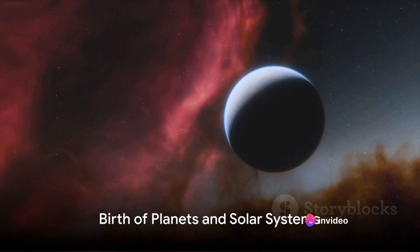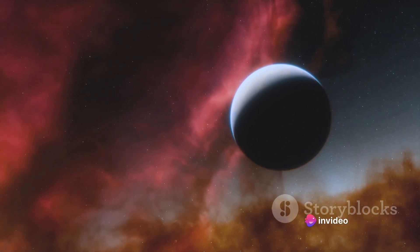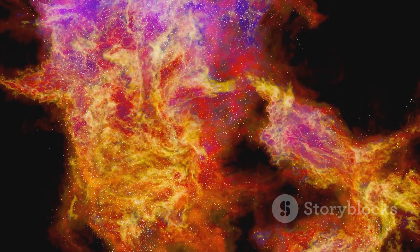In the cosmic tapestry, planets and solar systems find their place. Imagine, if you will, a nebulous cloud, vast and swirling with dust and gas. This is the cradle of celestial bodies, a nursery for potential planets and solar systems.